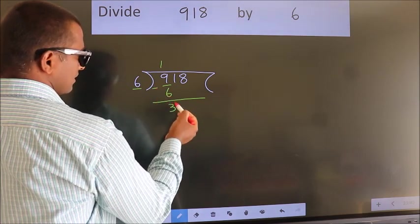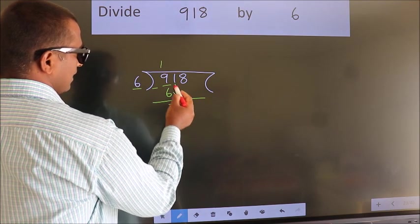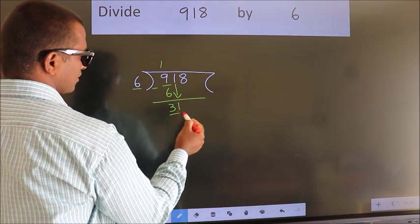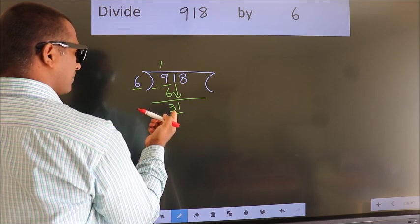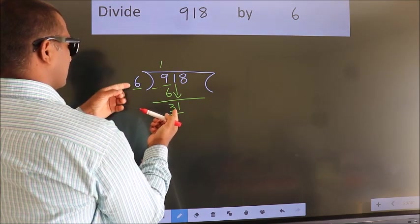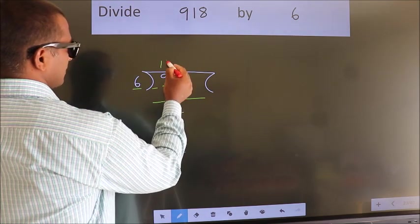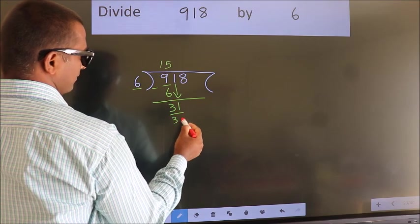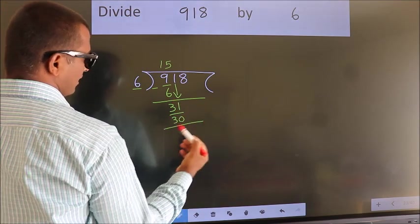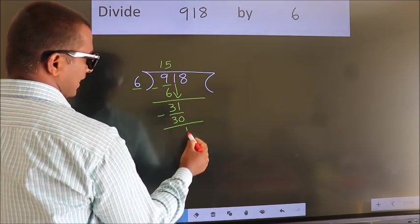After this, bring down the beside number. So 1 down. So 31. A number close to 31 in 6 table is 6 5s 30. Now we subtract. We get 1.